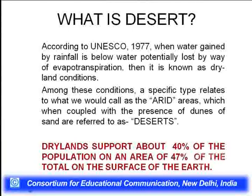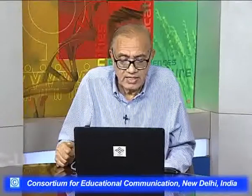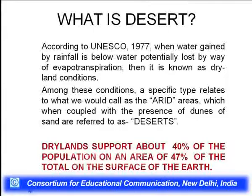According to the UNESCO 1977 definition, when water gained by rainfall is below water potentially lost by evapotranspiration, it is known as dryland. Simply put, when precipitation is less than potential evapotranspiration, it may be considered a dryland. A specific type relates to arid areas — more dry areas which, when coupled with the presence of dunes and sands, are called deserts. Drylands support about 40 percent of the total population and cover 47 percent of the Earth's surface.